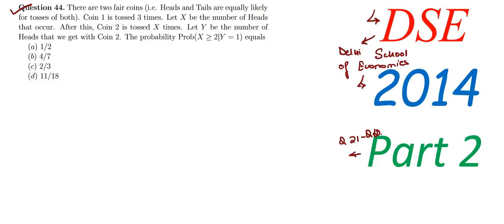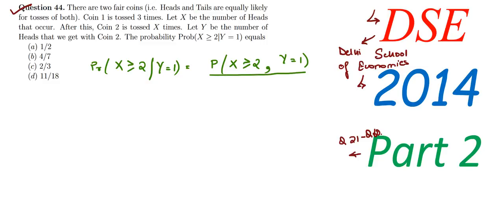The required probability is P(X ≥ 2 | Y = 1). This is conditional probability. We know the formula: P(X ≥ 2 and Y = 1) divided by P(Y = 1). So basically this is our equation.